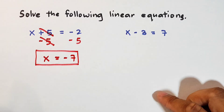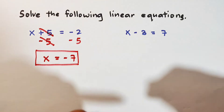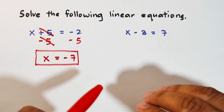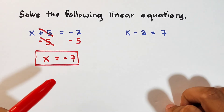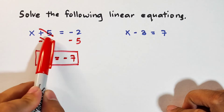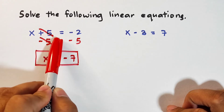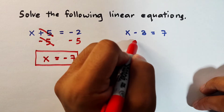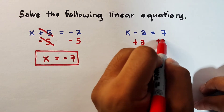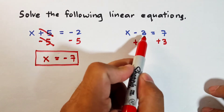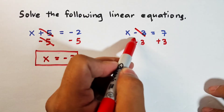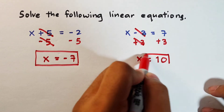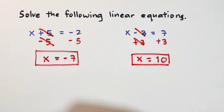As you can see, negative 7 is our answer for item number 1. Next, let's move on with item number 2. We have x minus 3 is equal to 7. What we need to eliminate here is negative 3. The additive inverse of minus 3 is positive 3, so we will add both sides of the equation by 3. Negative 3 plus 3 is 0 — simply eliminate that part. Then you have x is equal to 7 plus 3, which is equal to 10. This is the value of x in the given equation.